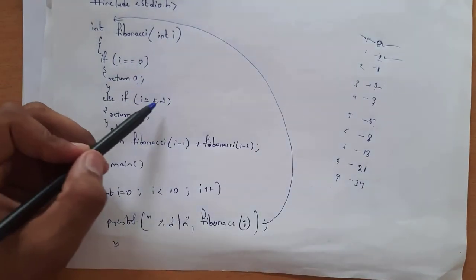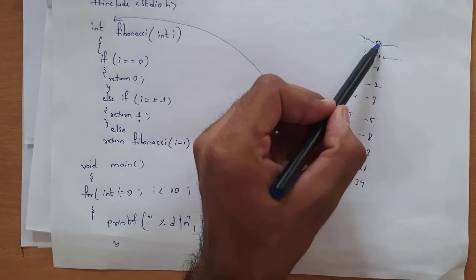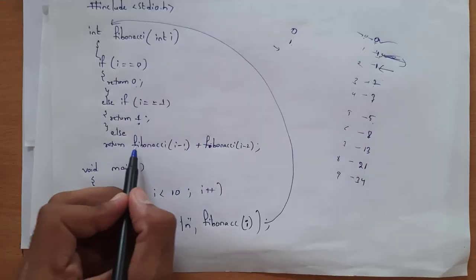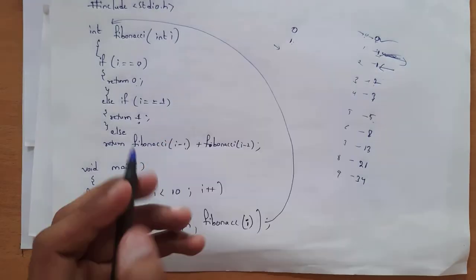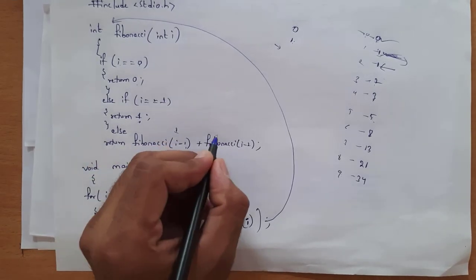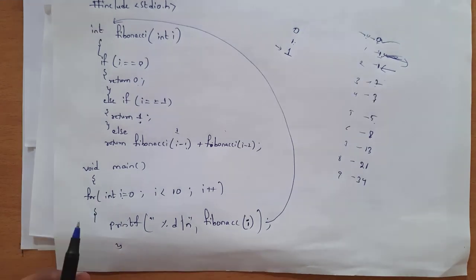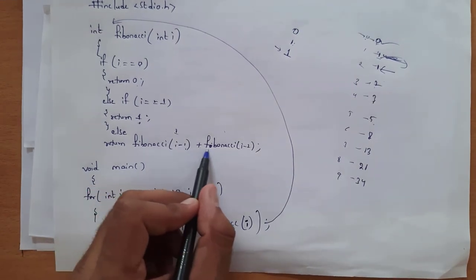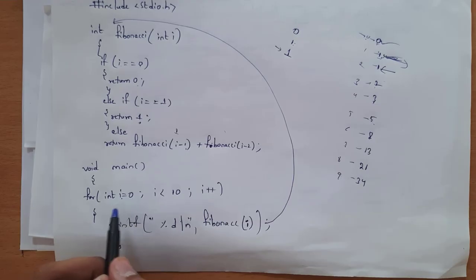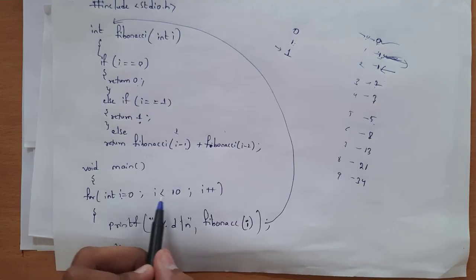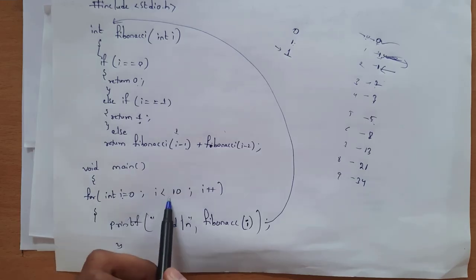First we return 0 and 1. After that we add these two numbers: fibonacci(i-1) + fibonacci(i-2), where i-1 gives 1 and i-2 gives 0, so 1+0=1. That is the result for the third element. We keep repeating this formula as long as int i = 0, i < 10, i++ is satisfied, meaning we get results up to 10 numbers.